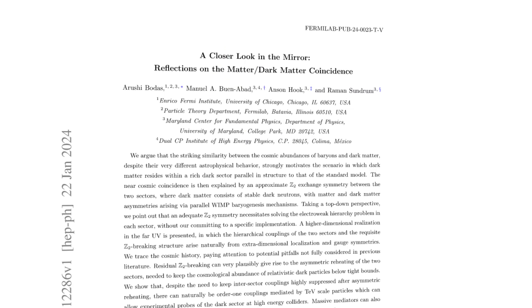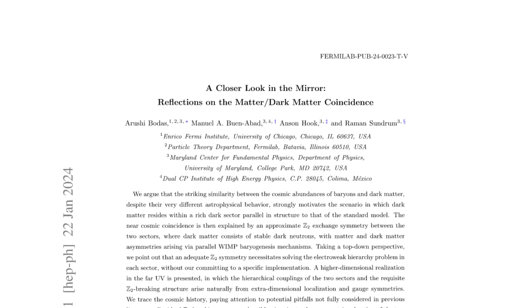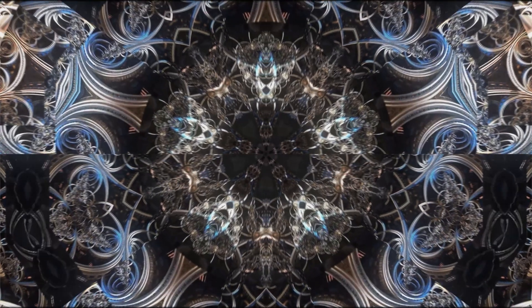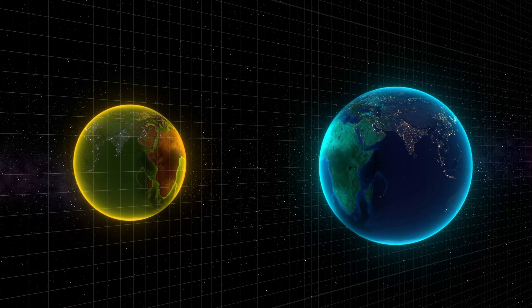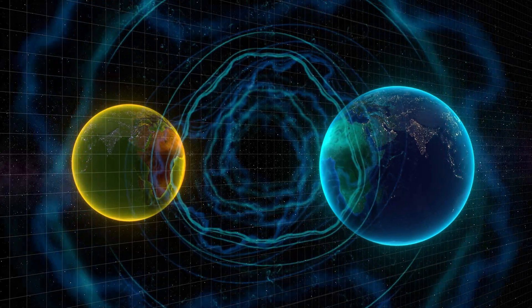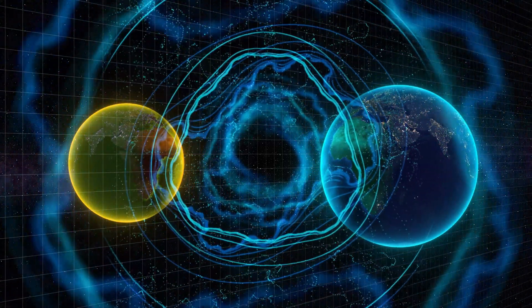A new study published on January 22, 2024, proposes a theory that dark matter is actually another universe that is a mirror image of our world. This study presents an intriguing proposition that dark matter, which makes up a significant portion of the universe's total matter, exists in a dark sector.